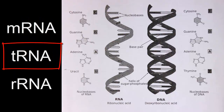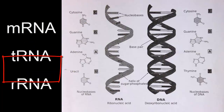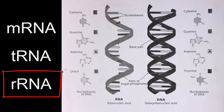Transfer RNA is transcribed from the DNA and then goes to the cytoplasm, picks up amino acids, and brings them to the ribosome during translation. Ribosomal RNA is made from the DNA and leaves the nucleus to the cytoplasm to become part of the ribosome.